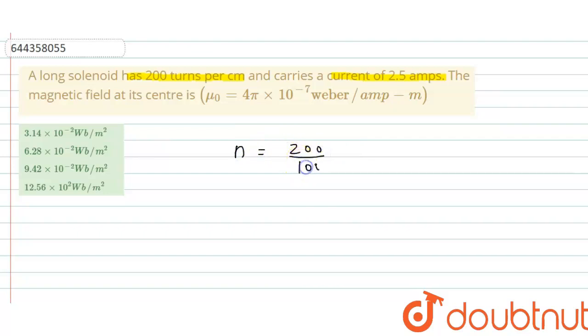So divide by 100, this equals 2 turns per meter.